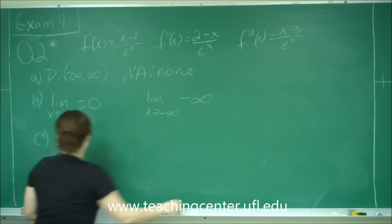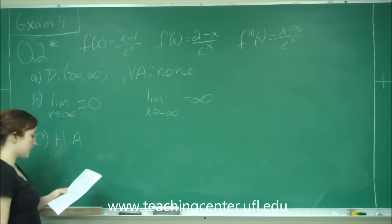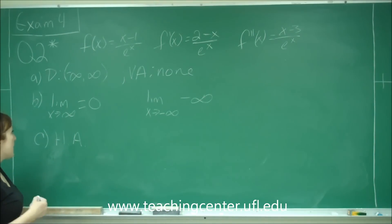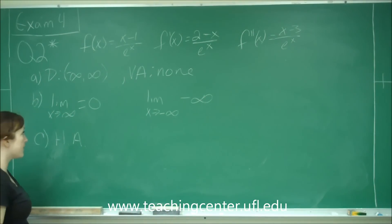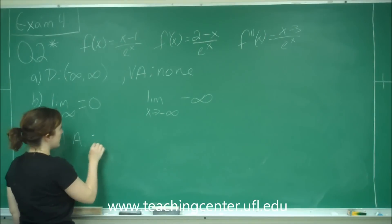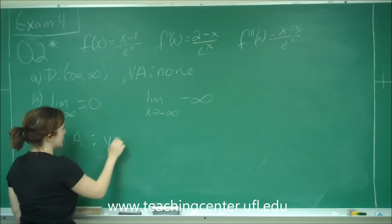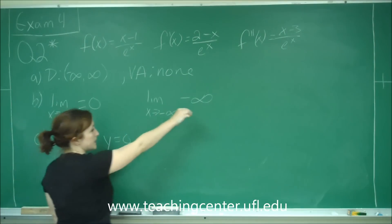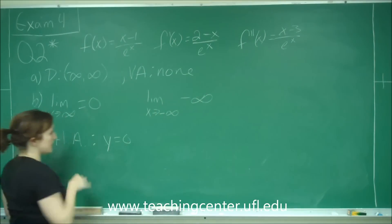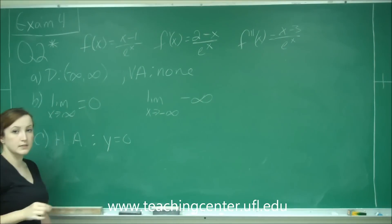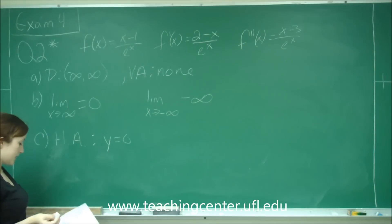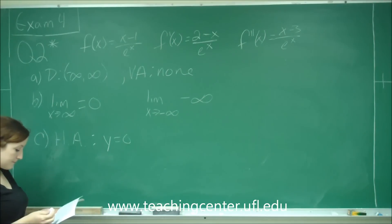Part C wants to know our horizontal asymptotes. The horizontal asymptote occurs when x approaches infinity, and we already know that gives y equals 0. As x goes to negative infinity, the limit was negative infinity, which doesn't approach a finite value, so that does not give us a horizontal asymptote.